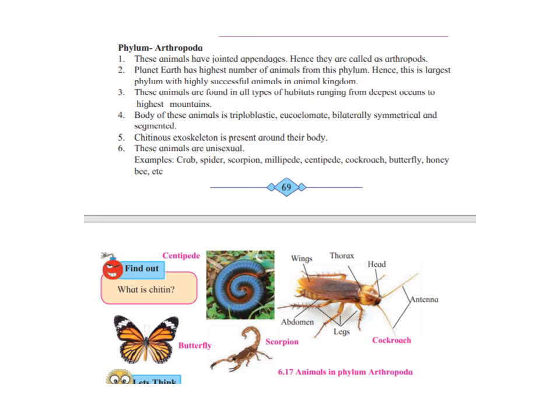Examples include crabs, spiders, scorpions, millipedes, centipedes, cockroaches, butterflies, honeybees, and many more. Today we completed seven phylums, and in the next lecture we will continue with the characteristics of the next three phylums. Phylum Chordata is further subdivided into many classes, which we will learn about. You will also be learning certain diagrams, important diagram markings, and characteristics — any four characteristics you feel comfortable with — along with examples.